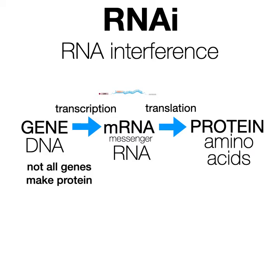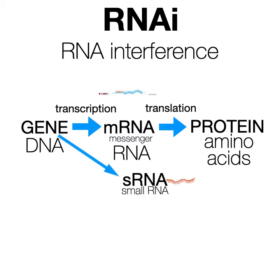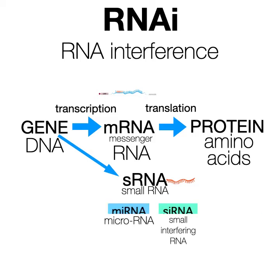This process works using a type of RNA called small RNA. It turns out that not all genes make protein — some genes instead make functional RNAs, which function in their RNA form, and they're more than just a go-between between the DNA and the protein. The kind I study are called small RNAs, or sRNAs, and the main type I'm going to talk about is microRNA. There's also something called small interfering RNA, or siRNA.